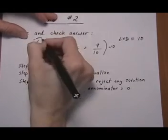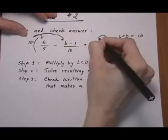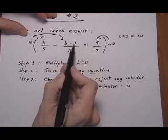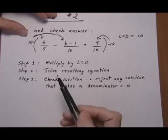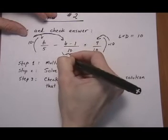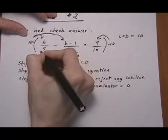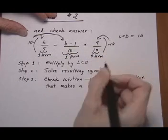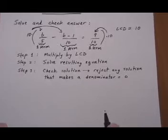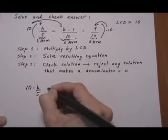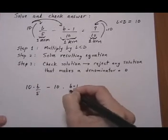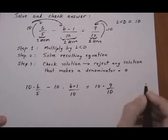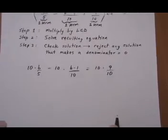And that means every single term gets the 10. And every term gets the 10 once. So we don't want to give the 10 to the first term here, the B, and then the 1. We don't want to give it to both. We want to give it to this single term. This is one term here. Just as this is one term. And this is one term. All right, so each term gets it once. So I give this 10 times B over 5 minus 10 times B minus 1 over 10 equals 10 times 9 over 10. So give the LCD to everybody to each term.